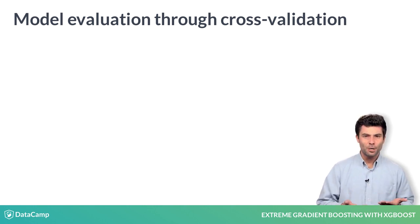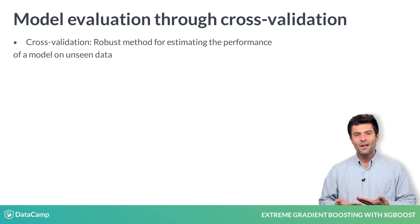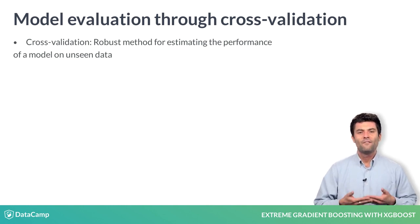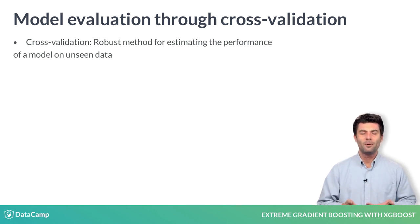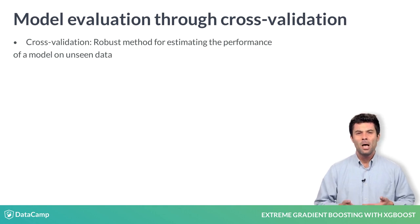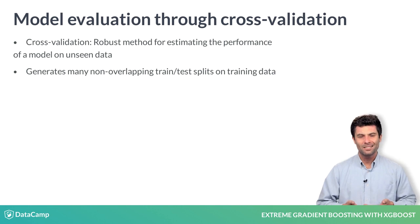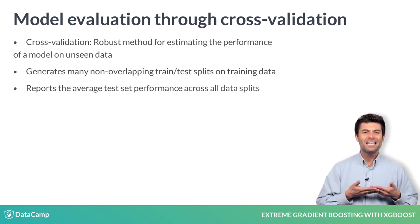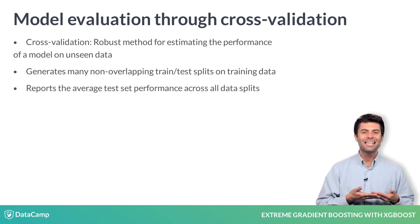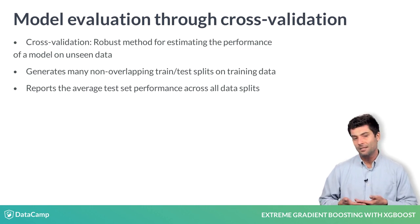As a refresher, cross-validation is a robust method for estimating the expected performance of a machine learning model on unseen data by generating many non-overlapping train-test splits on your training data and reporting the average test set performance across all data splits.